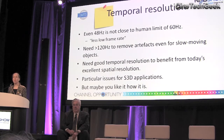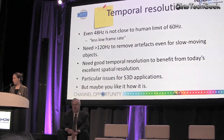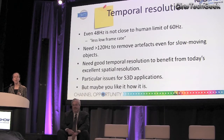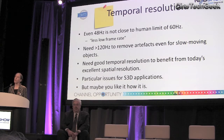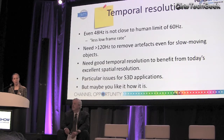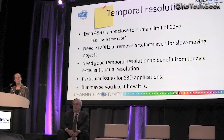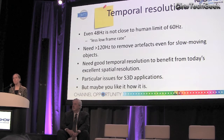My summary on temporal resolution is that we haven't turned that knob nearly high enough. We've heard a lot about 48 Hz in recent years — so-called high frame rate — but really it's less low frame rate: it's not close to the required 60 Hz, and you actually need over 120 Hz to remove artefacts even for slow-moving objects. Our poor temporal resolution means we're not benefiting as much as we could from today's good spatial resolution. There are also particular implications for stereoscopic 3D. And I'd note at the bottom: maybe you like it how it is — some critics felt that The Hobbit's high frame rate was too realistic and looked wrong.